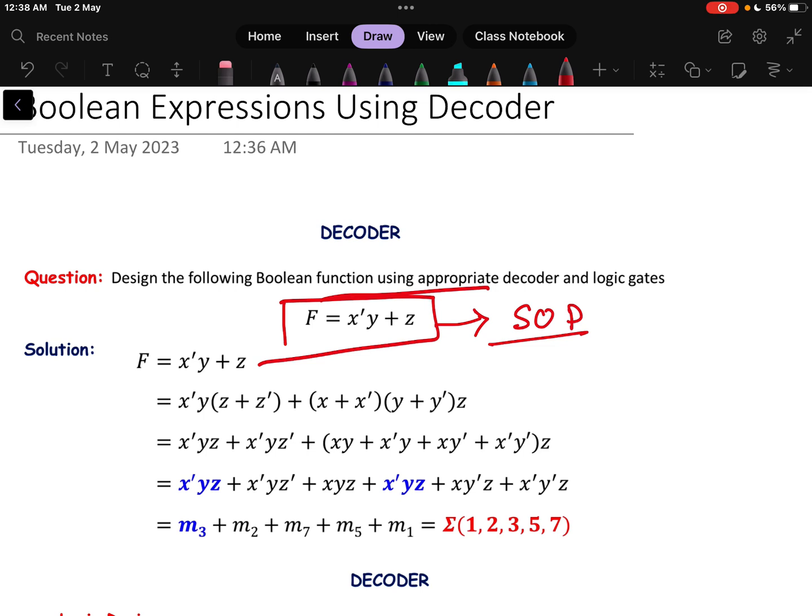Now F equals x dash y plus z. How to convert that to SOP? I need that in every term there should be x, y, and z. x dash y is there, so we are multiplying z plus z dash because this value will be equals to 1, so we do not change any value mathematically. Next, z is here, with that we are multiplying x plus x dash and we are multiplying y plus y dash.